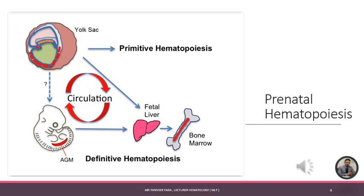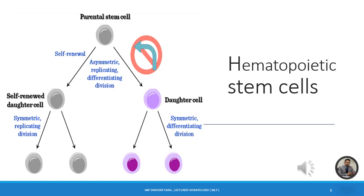Definitive hematopoiesis means that migration starts from the liver and spleen toward the bone, and it occurs throughout the majority of human life. It is very important to understand the qualities of a hematopoietic stem cell.